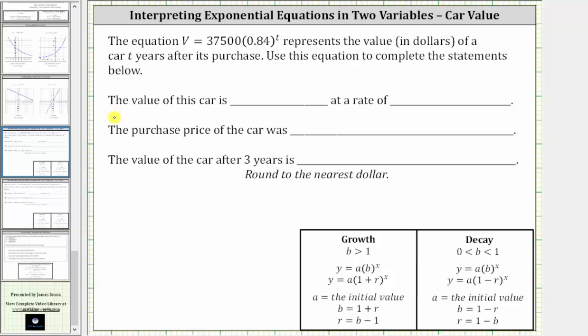For the first statement, the value of this car is increasing or decreasing at what rate? So the first thing to notice about the equation is that the base b is 0.84, which is between zero and one, and therefore we have exponential decay.